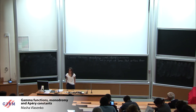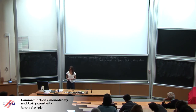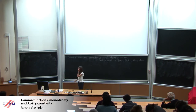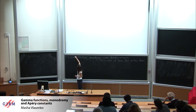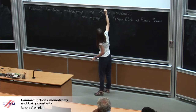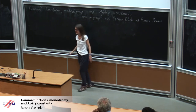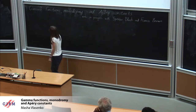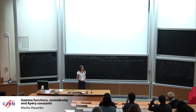I would like to thank the organizers for inviting me here. It's a pleasure to be here; it's my first time at CRM and I really enjoyed it. I will speak about gamma functions, monodromy, and Apéry constants. There will be four parts in the talk: the first three about gamma functions, monodromy, and Apéry constants, and then part four presenting some of our results relating these subjects. This is work in progress with Spencer Bloch and Francis Brown.